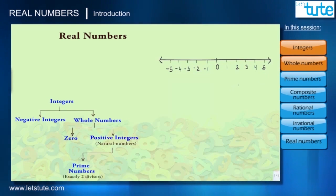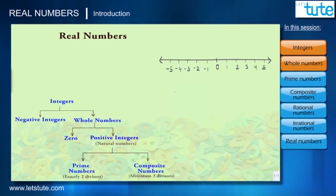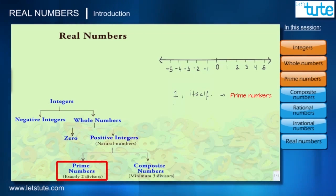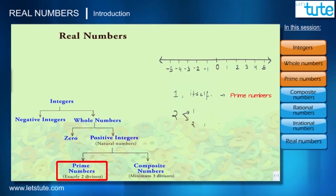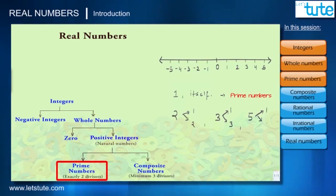These positive integers are further classified into prime numbers and composite numbers. Positive integers which have exactly two divisors — that is, the number 1 and the number itself — are called prime numbers. For example, 2 has exactly two divisors: 1 and 2. Similarly, 3 has divisors 1 and 3, and 5 has divisors 1 and 5. So 2, 3, and 5 are all prime numbers.